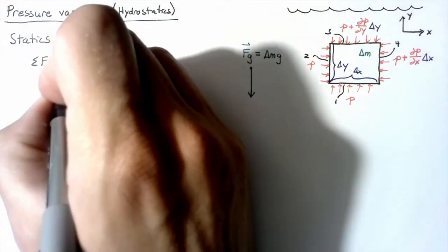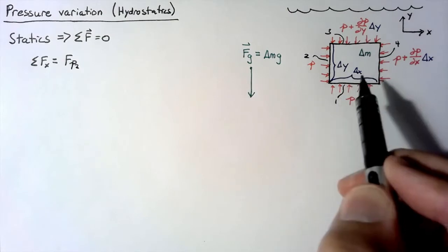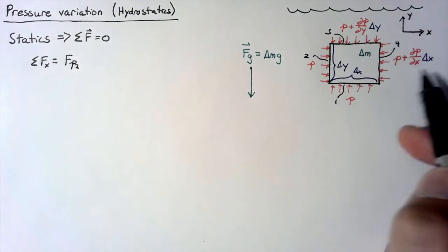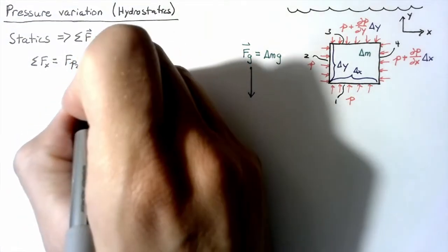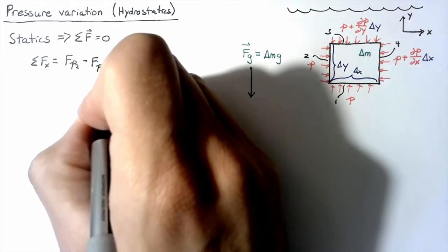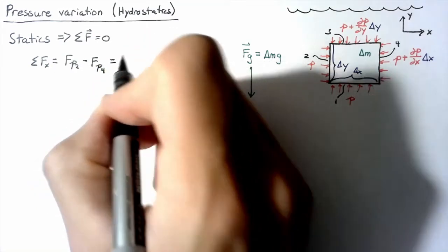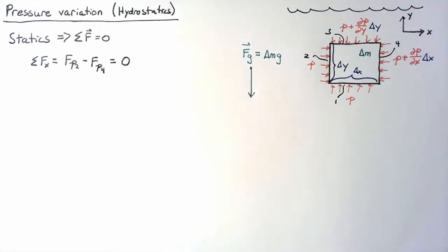We're going to have some force of pressure on face 2 that is going to be pushing our little mass to the right, and we're going to have some force of pressure on face 4 pushing it to the left. So our sum of the forces is just the force of pressure on 2 minus the force of pressure on 4, and this is going to be equal to 0. Again, there's no acceleration. The fluid is going to be still.